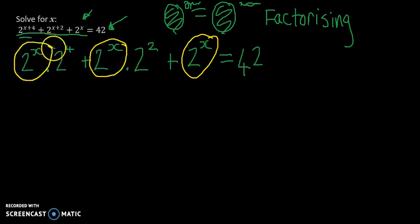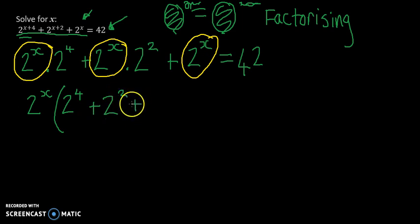It's still okay to use highlighters when you're factorising. If it helps you, go right ahead and do it. Okay, we're taking out the common factor of 2 to the power of x and we're left with 2 to the power of 4 plus 2 to the power of 2 plus 1, and that equals 42.